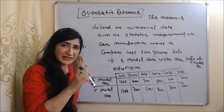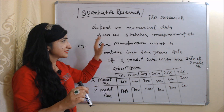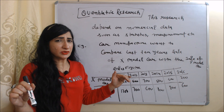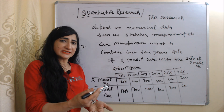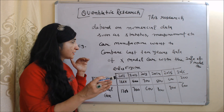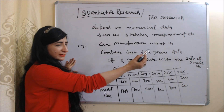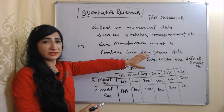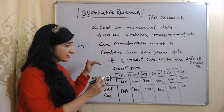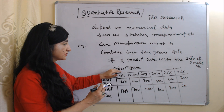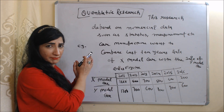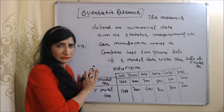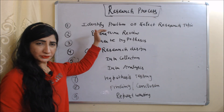Next is quantitative research. Quantitative research depends on numerical data such as statistics and measurements. For example, a car manufacturer wants to compare the last 10 years' sales of the X model car with the Y model car. For this research, he will use sales figures which are present in the form of numbers, and by observing those sales figures he will come to a conclusion.